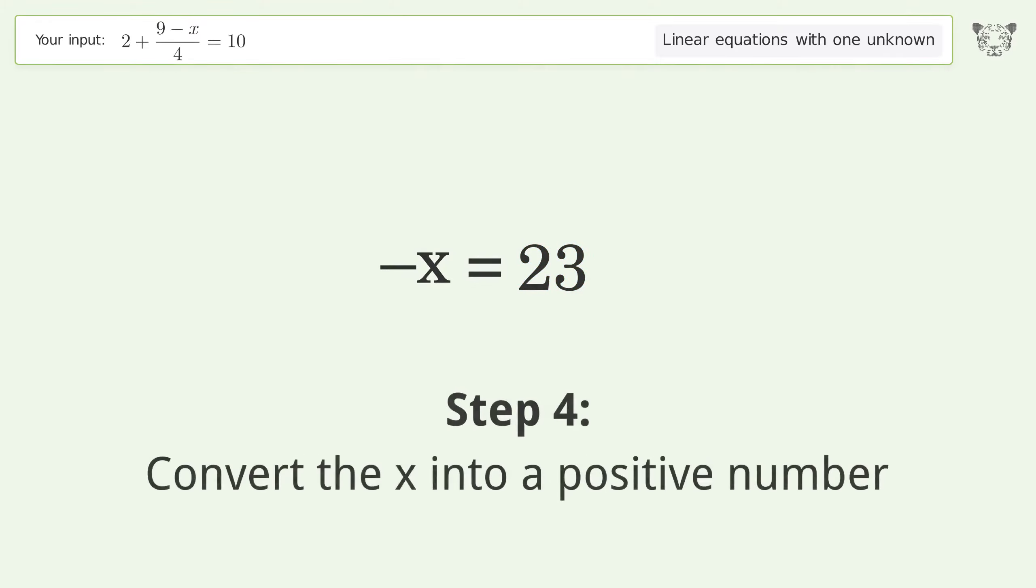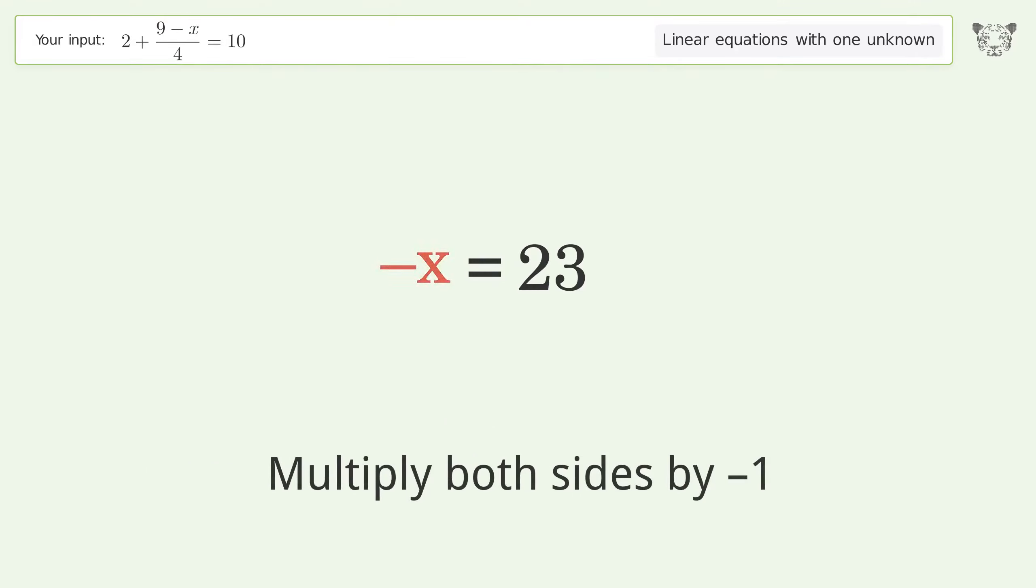Convert the x into a positive number. Multiply both sides by negative 1. Remove the 1s. Simplify the arithmetic. Multiply the signific, and so the final result is x equals negative 23.